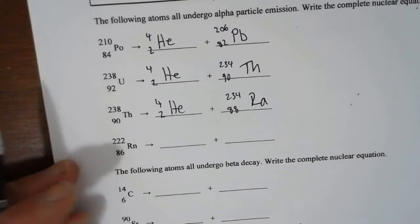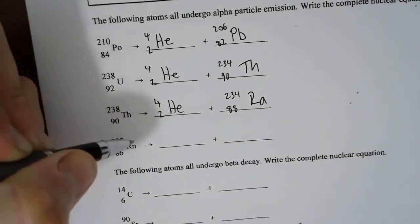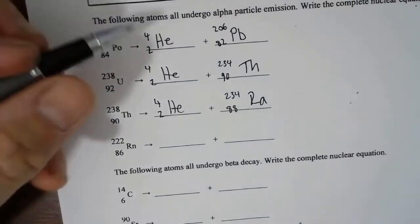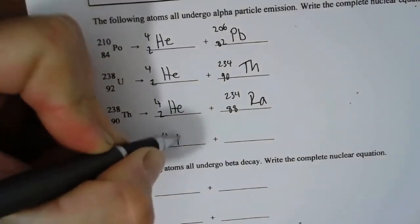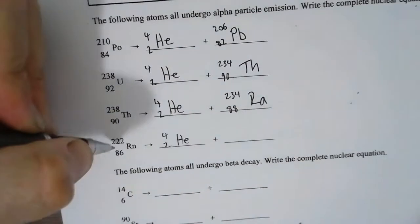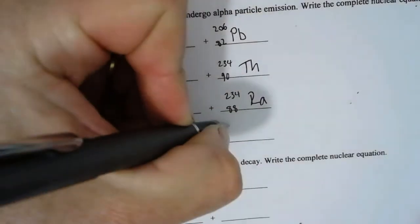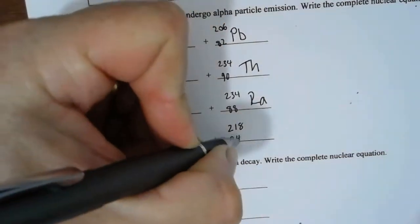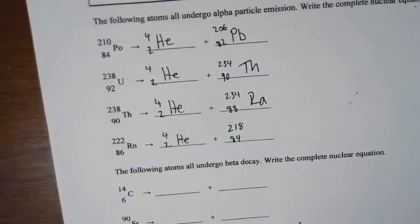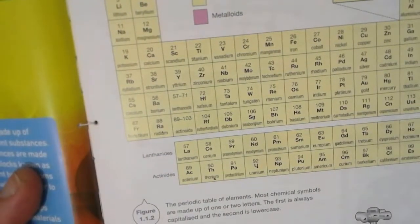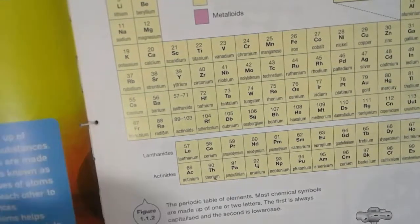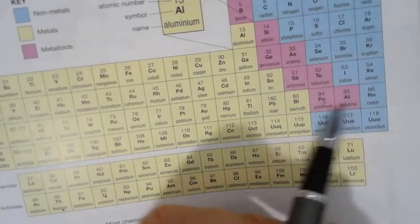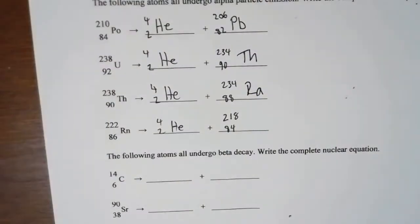Okay, and one more. This is radon. Again, alpha decay, so helium nucleus. So 222 minus 4 is 218. 86 minus 2 is 84. Periodic table again, find 84, and 84 is polonium. So we've got radon to polonium, Po.